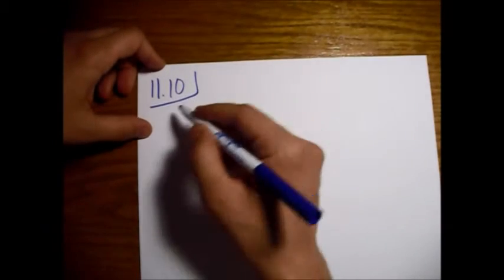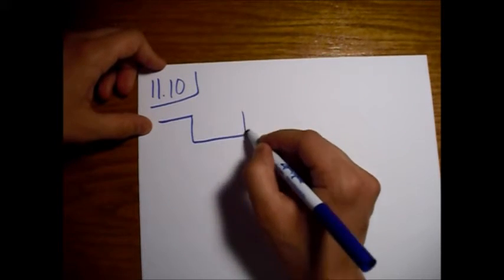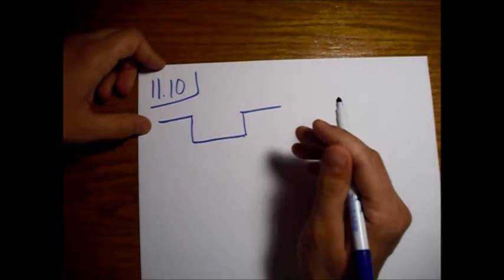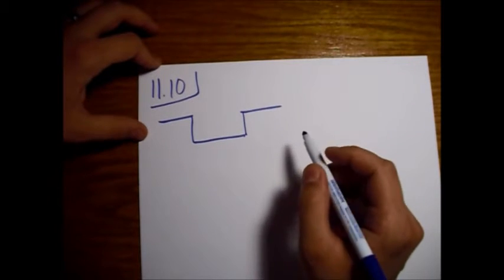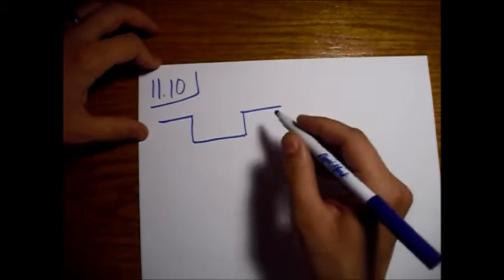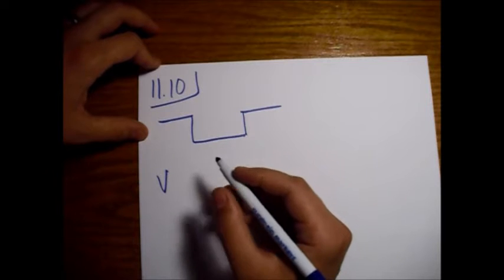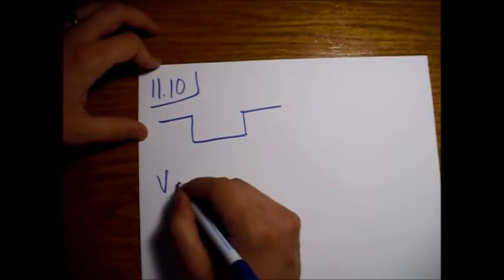So let's first talk about soft sphere scattering. Basically, we're scattering off of the three-dimensional spherical equivalent of just a finite square well. I'll write the potential — this is found in equation 11.81.